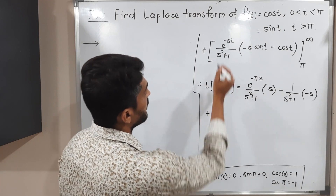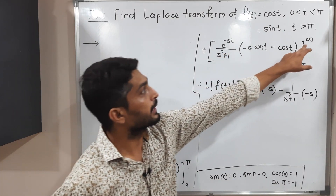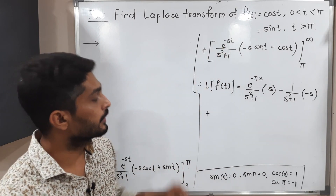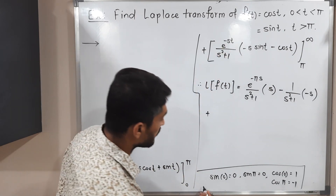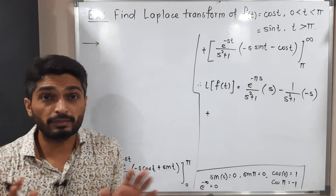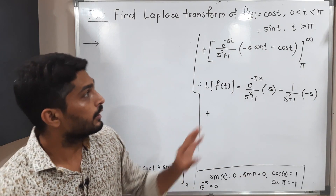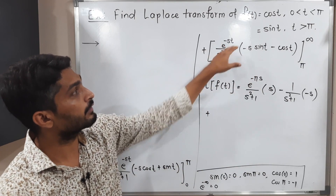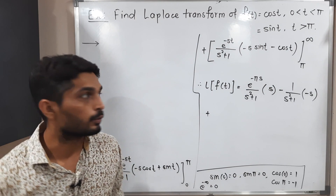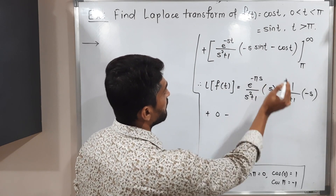Now we put the upper limit infinity in the second integral. We will have e^(-∞) which equals zero, so zero times anything in the bracket gives zero. Therefore, putting the upper limit gives zero entirely.